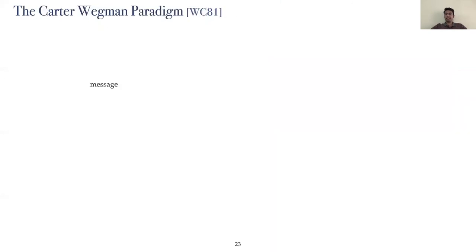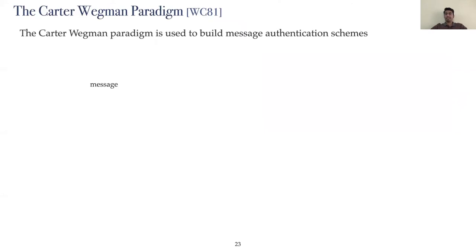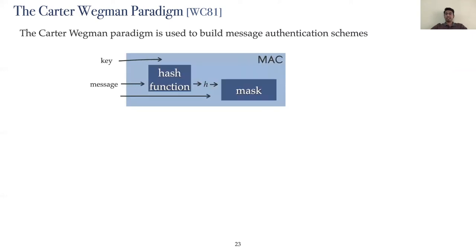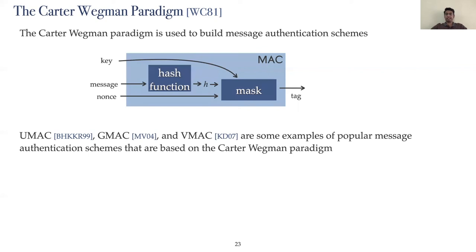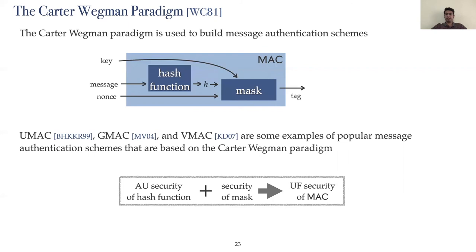Moving on in our modular design journey, we now look at the Carter-Wegman paradigm. This paradigm, introduced in 1981, is a well-known technique used to construct a message authentication scheme using an almost universal hash function and a cryptographic masking function. The general construction passes the message through the hash function and then masks the hash using the key and the nonce to generate the tag. Examples of such schemes include UMAC, VMAC, and GMAC. The UF security of the MAC follows from the almost universality of the underlying hash function and the security of the cryptographic masking function — which could be PRF security or IND-CPA security depending on the mask.